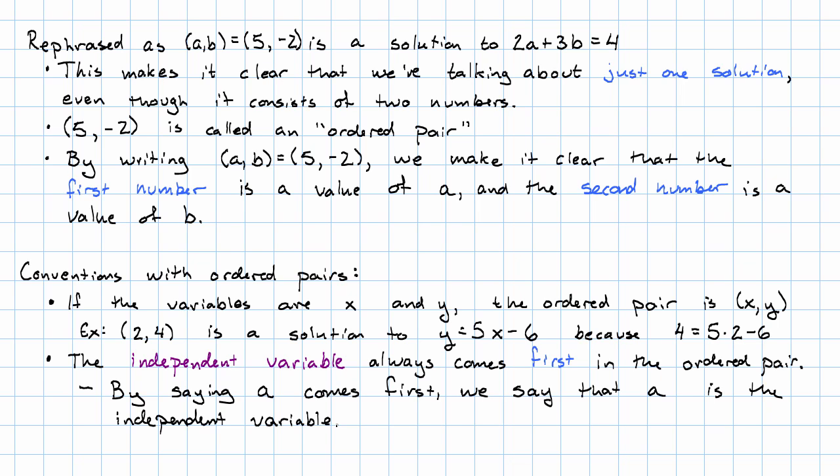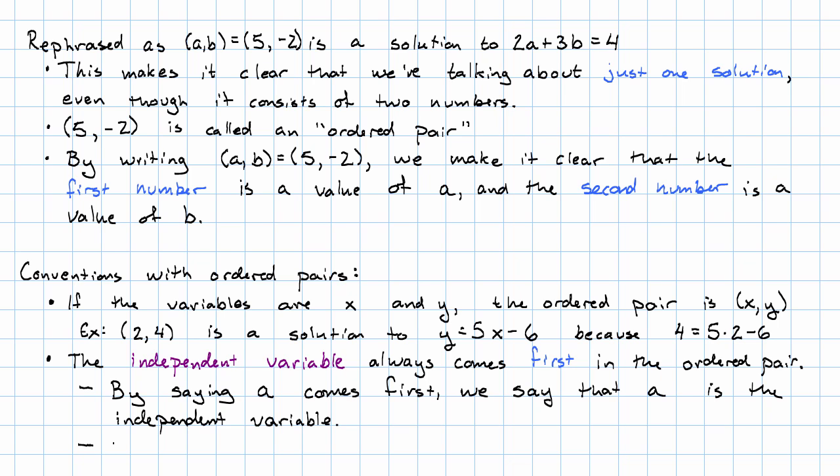By saying that I'm going to write my ordered pairs A comma B, I'm telling you that I'm seeing A as the independent variable. But also, if it's obvious which variable is independent, that variable will come first in ordered pairs.